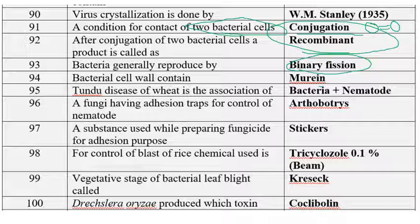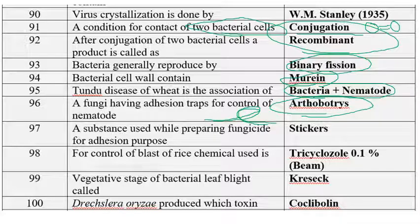Bacterial cell wall is made up of murein or peptidoglycan. Tundu disease of wheat is associated with bacteria and nematode Anguina tritici, or Corynebacterium tritici or Rathayibacter tritici. The fungi having adhesion traps for control of nematodes is Arthrobotrys — this fungus has fungal traps that catch nematodes. A substance used during preparation of fungicides for adhesion purposes is stickers.